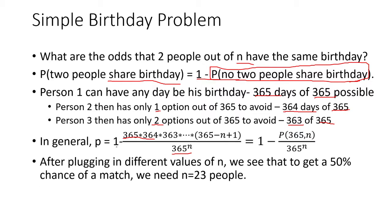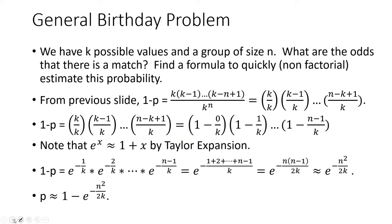And we'll simply notice that this numerator here can be expressed as a permutation. So we can simplify this down into 1 minus the permutation of 365 and n divided by 365 to the n. And after we plug in different values of n to this formula, we can see that there's a 50% chance of a match with 23 people, which is a little bit unintuitive.